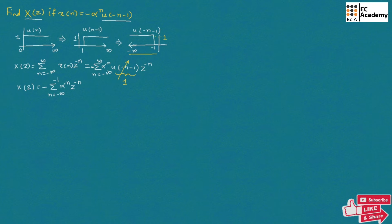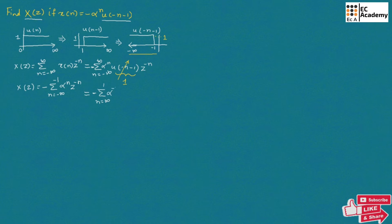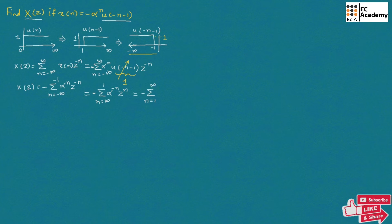To simplify our calculation, let us change the sign of the summation. We take minus summation from infinity to 1, changing the sign of the power of alpha, giving alpha to the power of minus N times Z to the power of N. Since summation from infinity to 1 and from 1 to infinity are equivalent, we write this as summation from N equals 1 to infinity of alpha to the power of minus N times Z to the power of N.